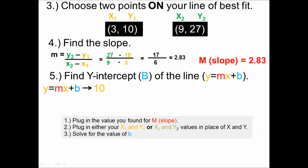If we plug in our y1 value, which is 10, that's going to equal our m value of 2.83 times our x1 value of 3, plus our value of b that we're trying to solve for. Following the order of operations — PEMDAS — we multiply 2.83 times 3 first, and that gives us 10 equals 8.5 plus b.